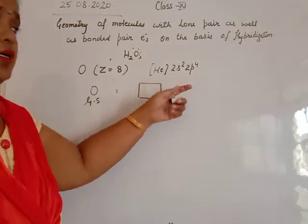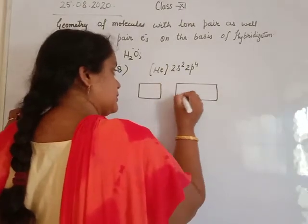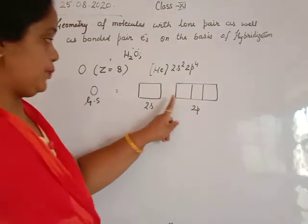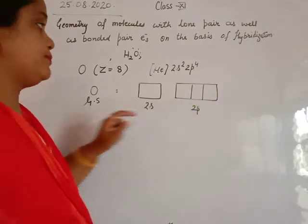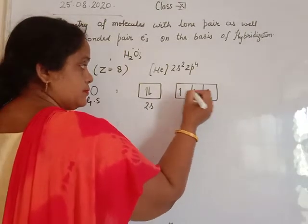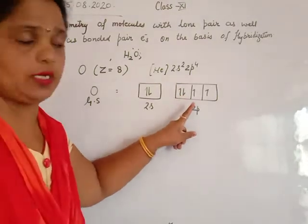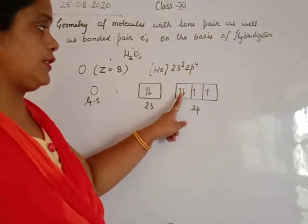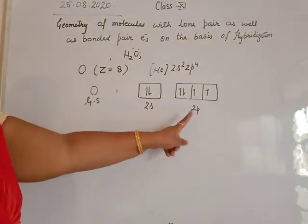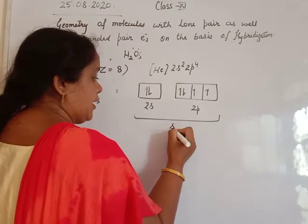The second shell consists of two subshells: s and p. That gives us 2s and 2px, 2py, 2pz. The s orbital has 2 electrons, and the p subshell has 4 electrons. According to Hund's rule, each orbital is half-filled first, then the fourth electron pairs up in 2px. So we have 2 unpaired electrons. The hybridization state is again sp3, and the expected geometry on the basis of sp3 hybridization is again tetrahedral, with a bond angle of 109.5 degrees.